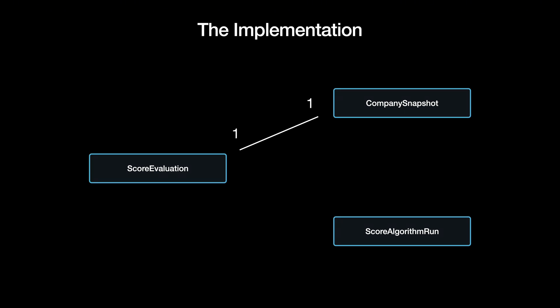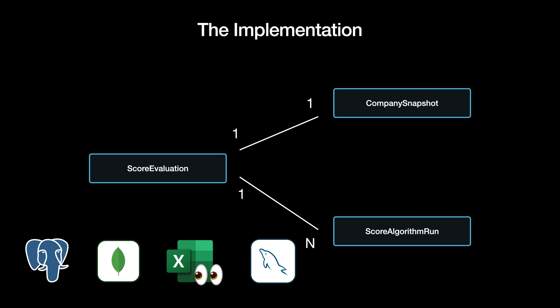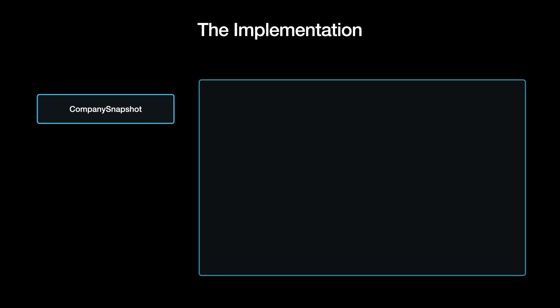One score evaluation has one company snapshot, and one company snapshot has one score evaluation. This relationship is essential because, as the company data may change, it is important to save the current state of the company for each run. One score evaluation has many score algorithm runs, one for each algorithm that should run for the individual evaluation. Depending on your database and normalization strategy, you may save everything in one document or use more tables or collections.